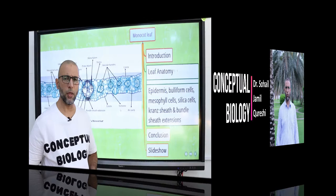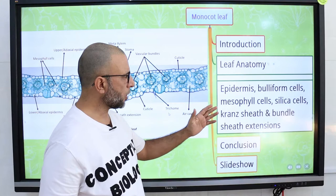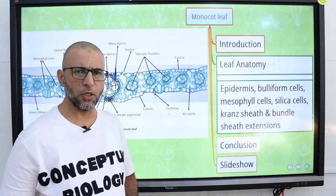Hi, I am Sohail. Today I am going to discuss the monocot leaf. Main points of the lesson are leaf anatomy including the epidermis, buliform cells, mesophyll cells, silica cells, Kranz sheath, and bundle sheath extensions.